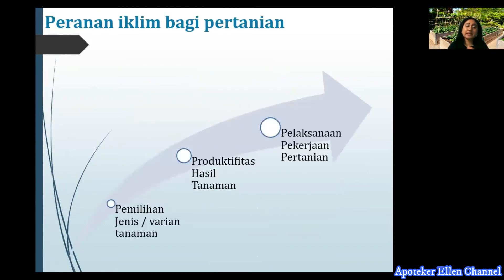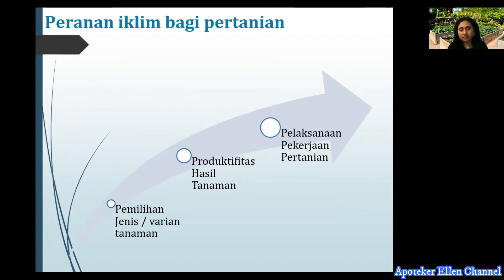Peranan iklim bagi pertanaman itu sendiri: yang pertama, dapat memilih jenis tanaman atau varian tanaman — jangan sampai ketika iklim tertentu, kita menanam tanaman yang tidak sesuai. Yang kedua, produktivitas dari hasil tanaman — jangan sampai karena salah menanam di musim hujan, akhirnya mempengaruhi produktivitas hasil. Yang terakhir adalah pelaksanaan pekerjaan tanaman — jangan sampai sudah bekerja keras, salah menanam, produksinya tidak ada dan buang tenaga. Jadi, peranan iklim sangat mempengaruhi ketiga faktor tersebut dan perlu diperhatikan.